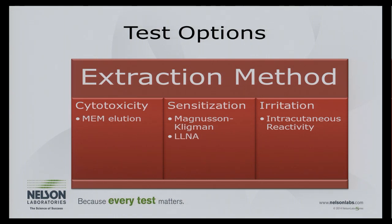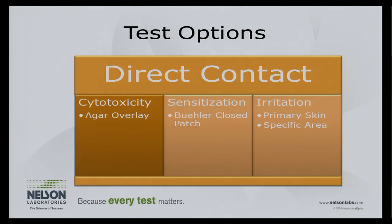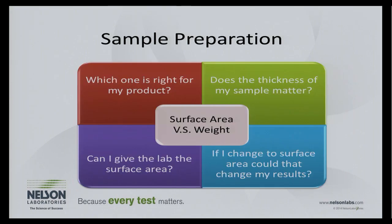The extraction versions of the big three are: MEM elution for cytotoxicity, Magnusson-Kligman or local lymph node assay for sensitization, and intercutaneous reactivity for irritation. The direct contact versions are: agar overlay for cytotoxicity, Buehler method for sensitization, and primary skin irritation. Because most devices contact some kind of fluid in the body, the extraction versions are most common.